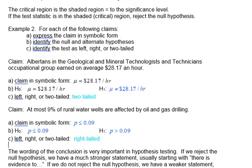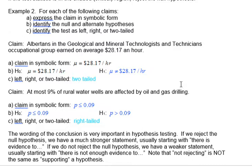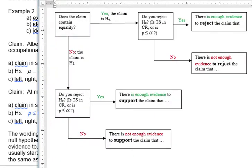The last piece we're going to look at is the conclusion we write once we have our calculations done — we'll cover the calculations in the next video. The wording of our conclusion depends on whether we reject or do not reject the null hypothesis, and whether the claim is the null or the alternate hypothesis. When we do reject the null hypothesis, we end up with a much stronger statement. There's a flowchart to help navigate the possibilities.